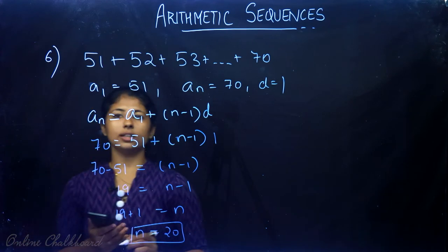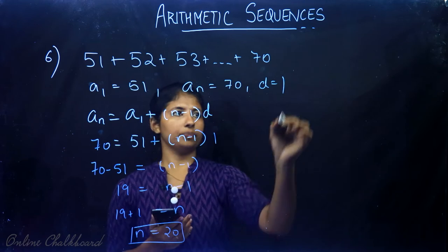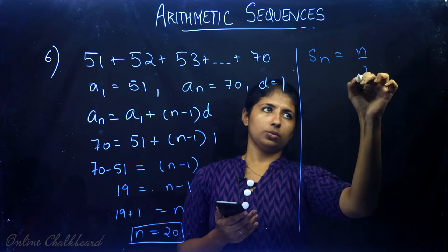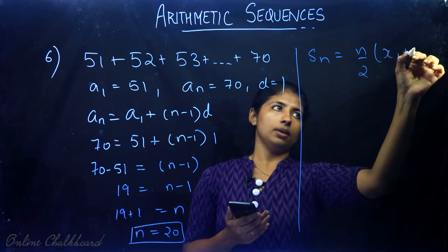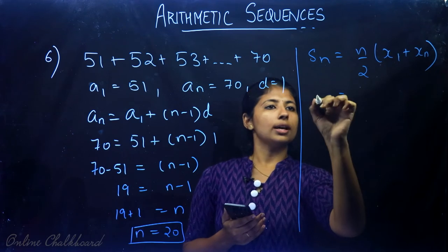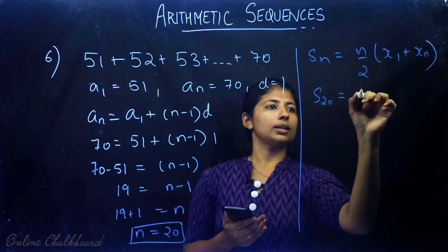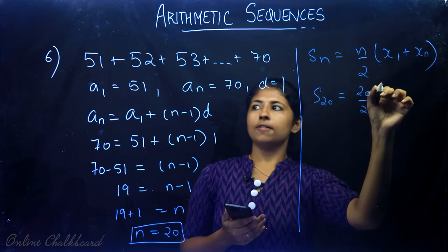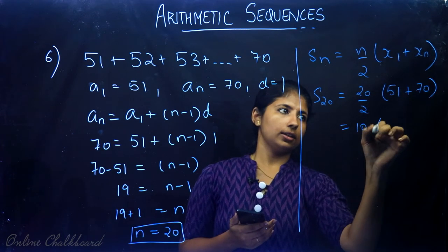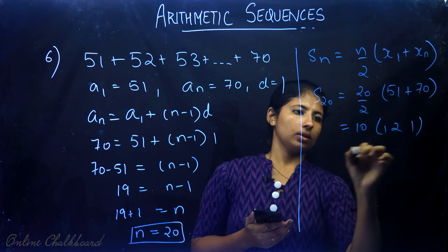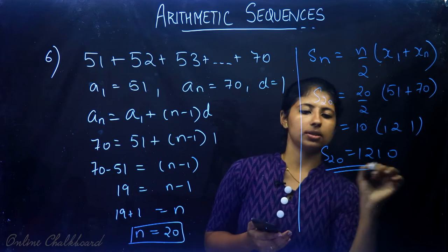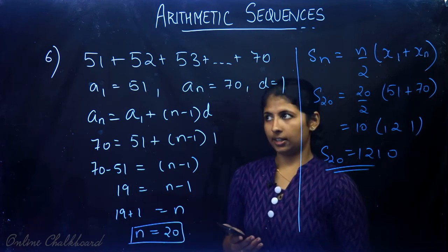Now that n equals 20, we find the sum using the formula: Sn equals n divided by 2 times (first term plus last term). So S20 equals 20 divided by 2 times (51 plus 70) equals 10 times 121, which gives 1210.